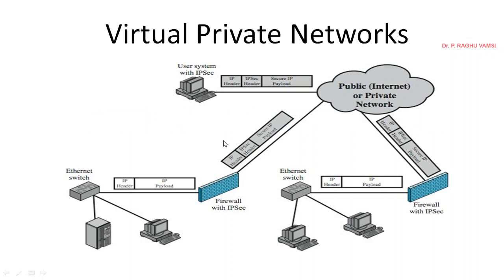For example, there is a user system with IP security. IP security is a security module that will be used in virtual private networks. Not only IP security — several other methods can be used for implementing virtual private networks. IP security is one type of security mechanism that we will see in next topics.